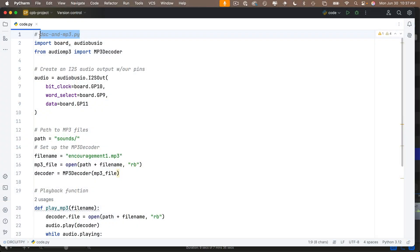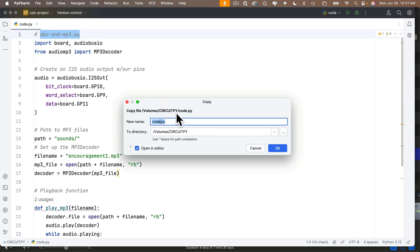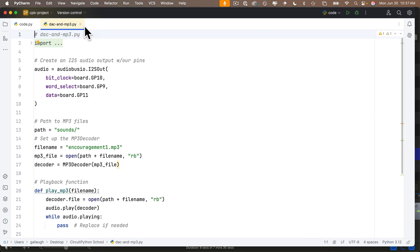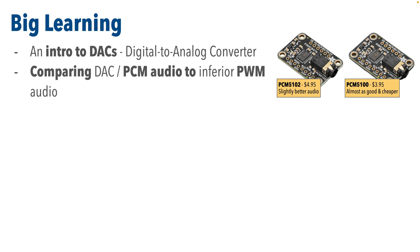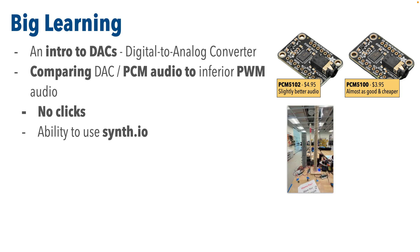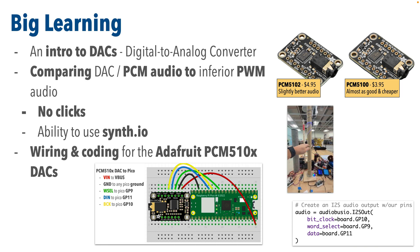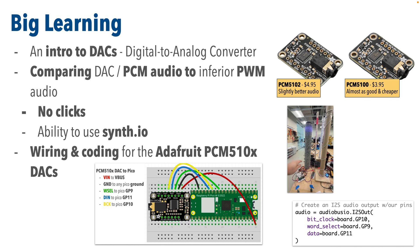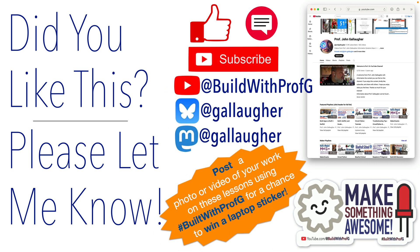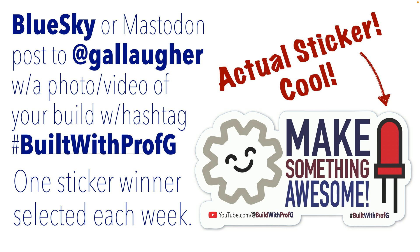We can now swap out this code for WAV code or even audio mixer code. We got an intro to DACs — digital to analog converters — and compared DAC PCM audio to the inferior PWM audio. Using a DAC, we can eliminate clicks and gain the ability to use the sophisticated sounds of the SynthIO library. We wired up an Adafruit PCM5102 DAC — wiring is the same for the 5100, which is just a dollar cheaper. All we needed was power, ground, and three additional wires, plus a single line of setup code. You're now in the higher quality sound business, ready to add an amp and try out SynthIO. Hack on, Sonorous ones, and make something awesome.